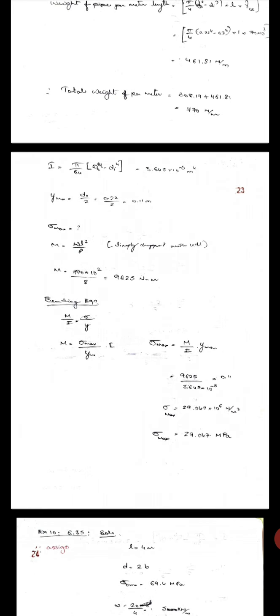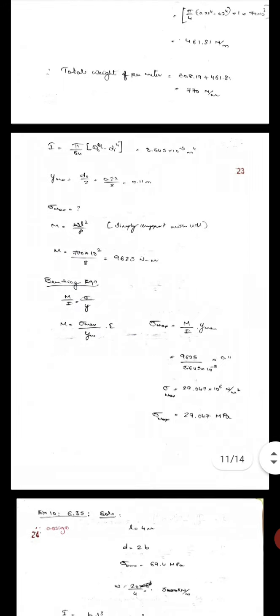Using the bending equation sigma/y = M/I, we have sigma_max/y_max = M/I. So sigma_max = M × y_max / I. That is 9.625 divided by 3.645 × 10⁻⁵ into 0.11. Sigma_max is 28.047 × 10⁶ pascals.